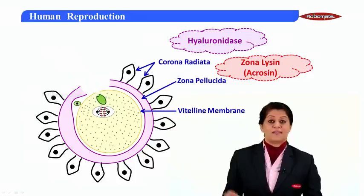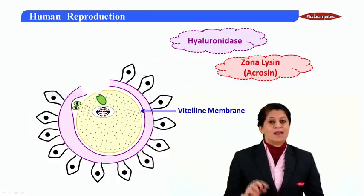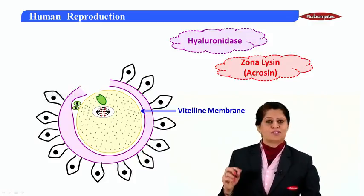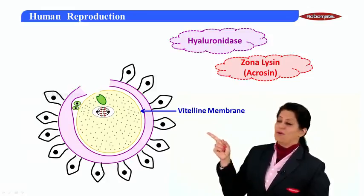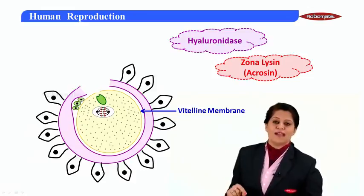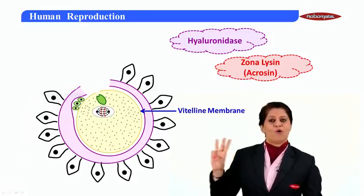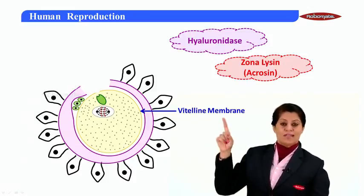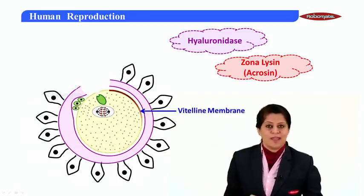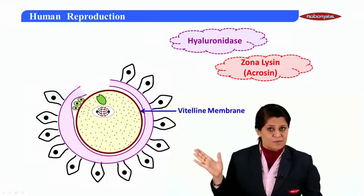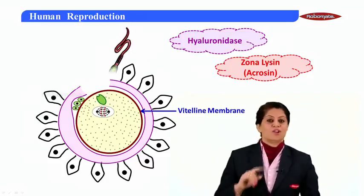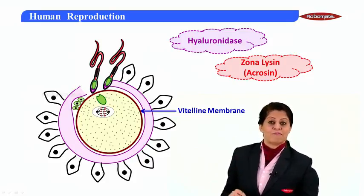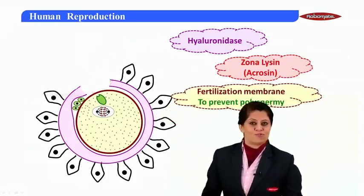Immediately after, meiosis 2 completes — remember the egg was arrested at metaphase 2 stage of meiosis 2; now it proceeds further and meiosis 2 completes. You can now see two polar bodies. The first polar body also divides to form another polar body, so in the perivitelline space you may see two or three polar bodies. Simultaneously, the vitelline membrane transforms into what we call the fertilization membrane, which prevents polyspermy — no other sperm can now penetrate through the egg.